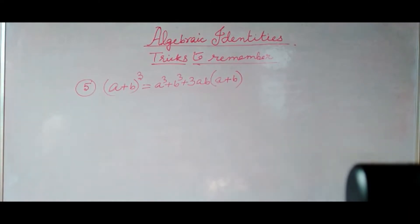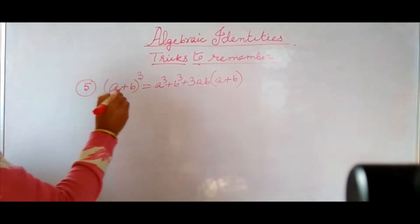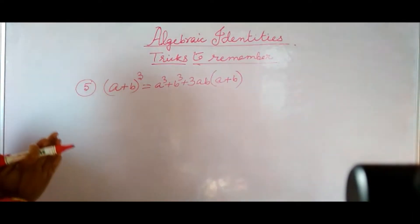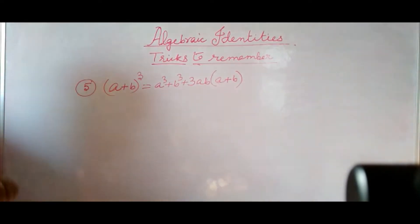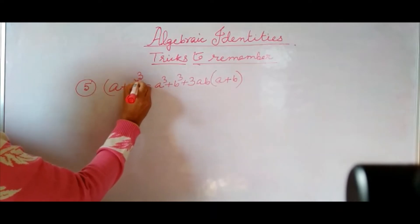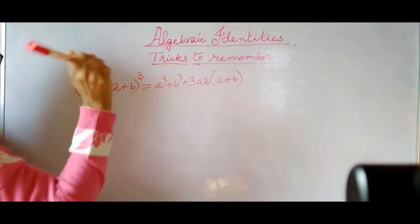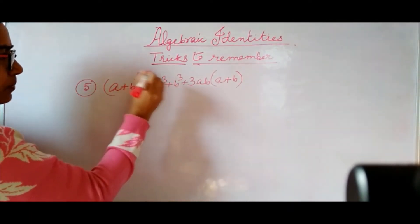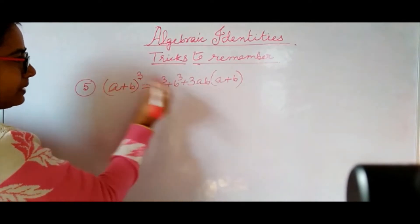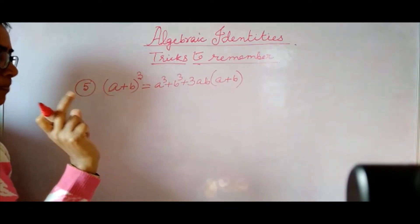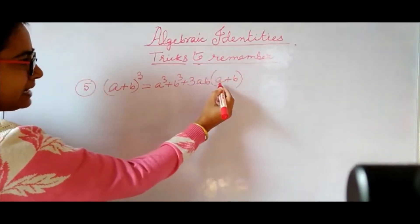Now let's go to the next identity — identity number 5: A plus B whole cube. Whenever I ask students what is A plus B whole cube, some students start with A square plus B square — so there is confusion. How to remember? Cube means power is 3, so it will be A power 3. Don't get confused. A cube plus B cube plus — this power is 3, so this 3 has come from the power — 3AB in bracket A plus B. That is the technique. You can remember easily.